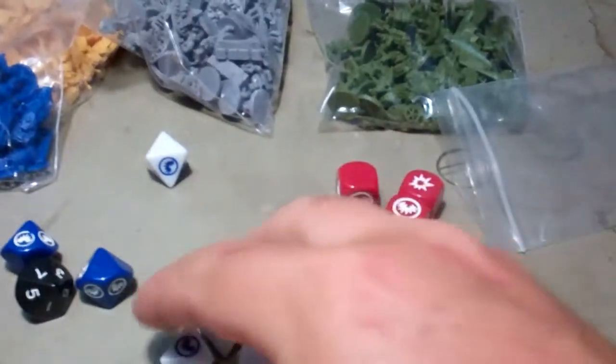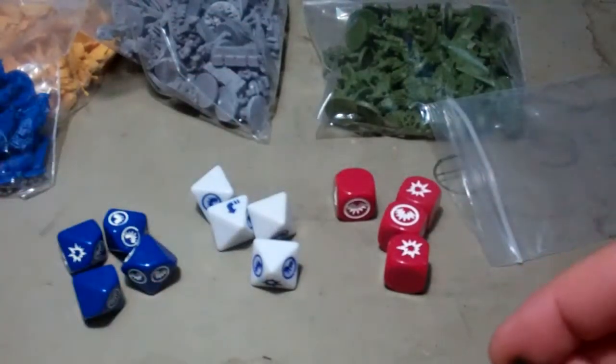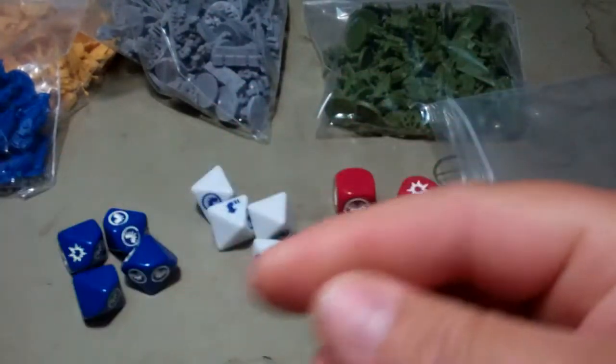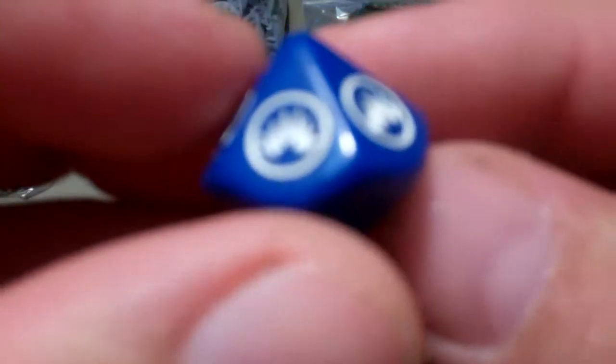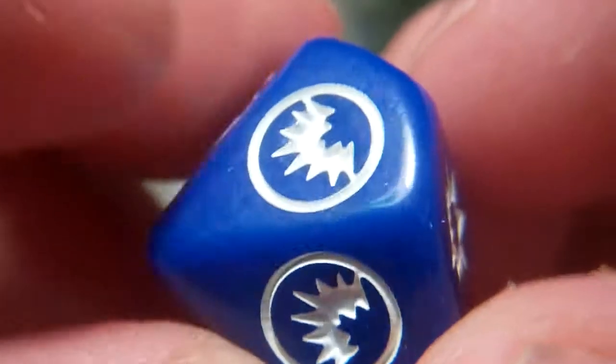You have your dice here, so you have some reds, some whites, and some blues, and you have one just ten sider by itself. You can see that, they have little markers on them.